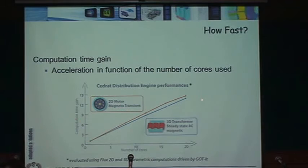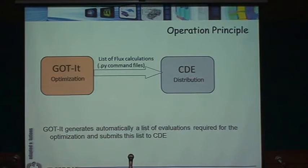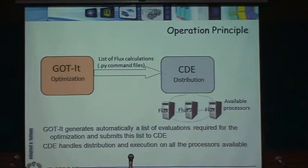This is called the CDE, working with Godit 2 and Flux 11.1. The speedup is measured as computation gain: for example, with 5 cores you make the optimization run 3 times faster — instead of 15 minutes it takes only 5. This is shown for both 2D motor and 3D transformer cases.